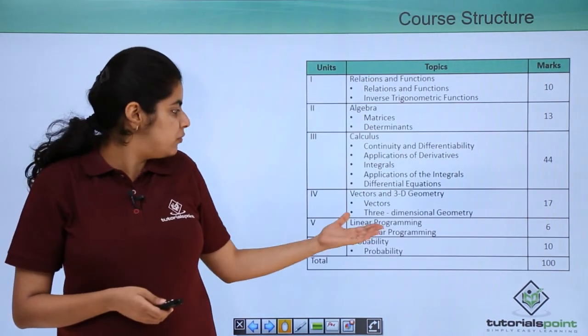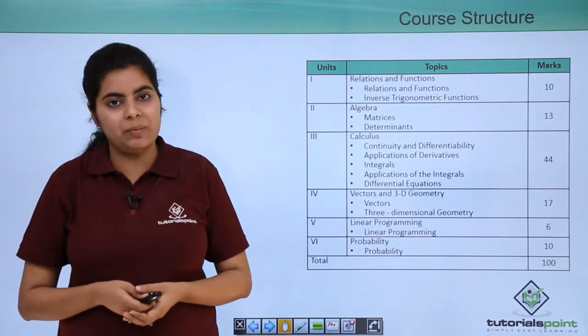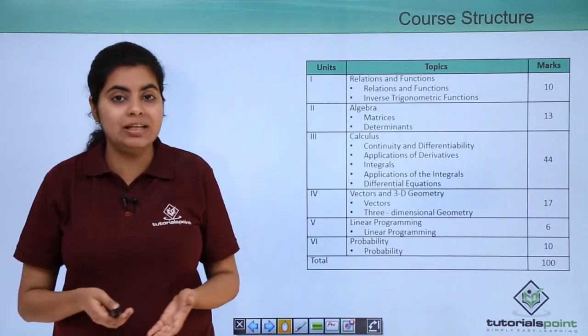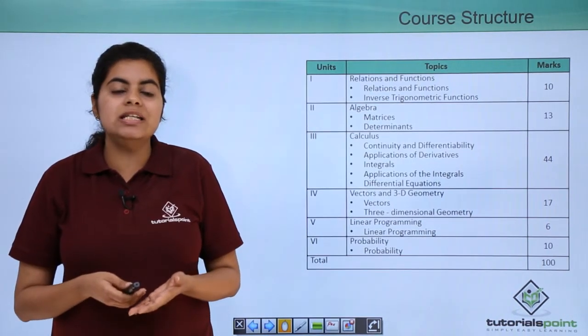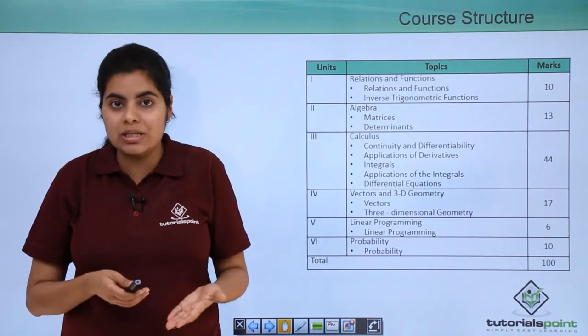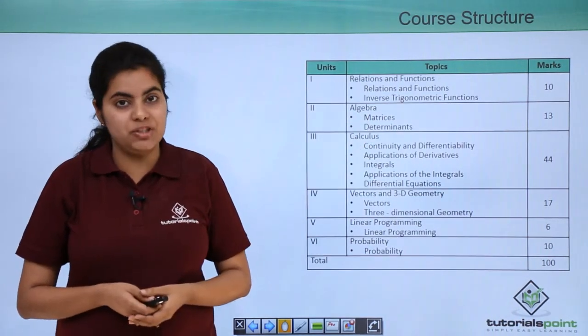Next we come on to the fifth unit which is linear programming. Linear programming is a must do in class 12th. You cannot leave this chapter because it is again one of the easiest chapters, one of the easiest units as well after the study of the unit of algebra.